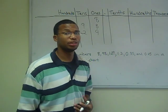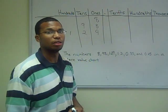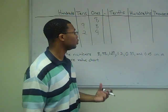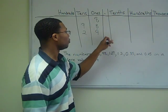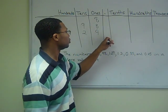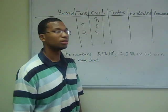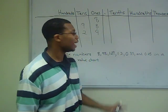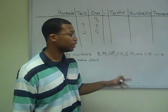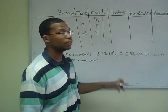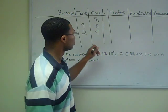The number 1.2 has a decimal place. So we'll first start off by putting a decimal, and we have the number 1 in the ones place and the number 2 in the tenths.